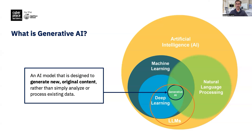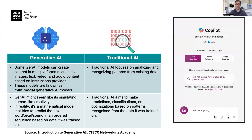Generative AI goes beyond simple analysis — it creates. It can create text, images, and music. It's trained to produce original content from patterns it has learned previously, and with deep learning technologies, this is actually possible. We can differentiate between traditional AI and Generative AI: while traditional AI is focused on analyzing and recognizing patterns, Generative AI simulates human-like creativity. It can create a wide variety of content — from images to text to audio and video — also known as a multi-modal Generative AI model.